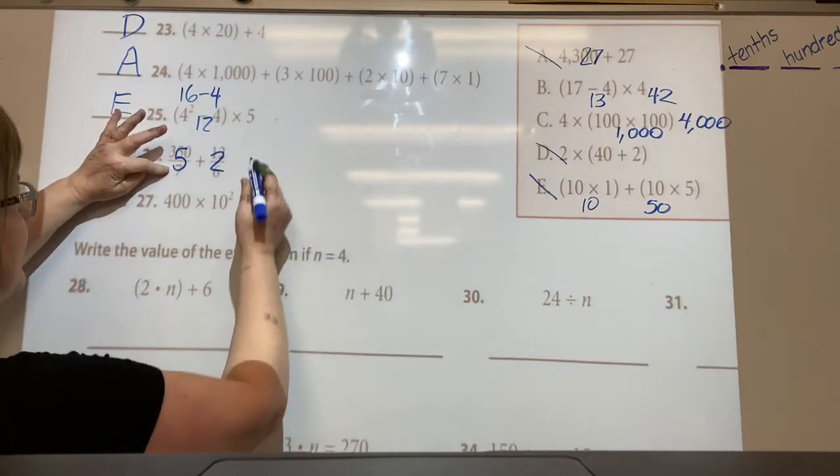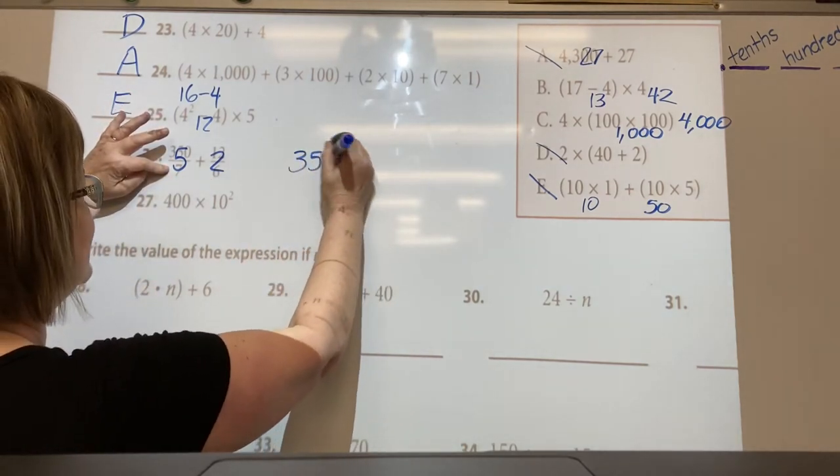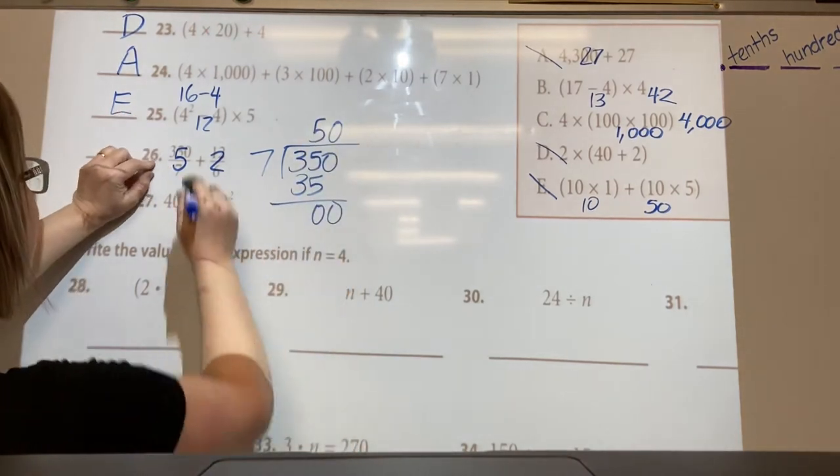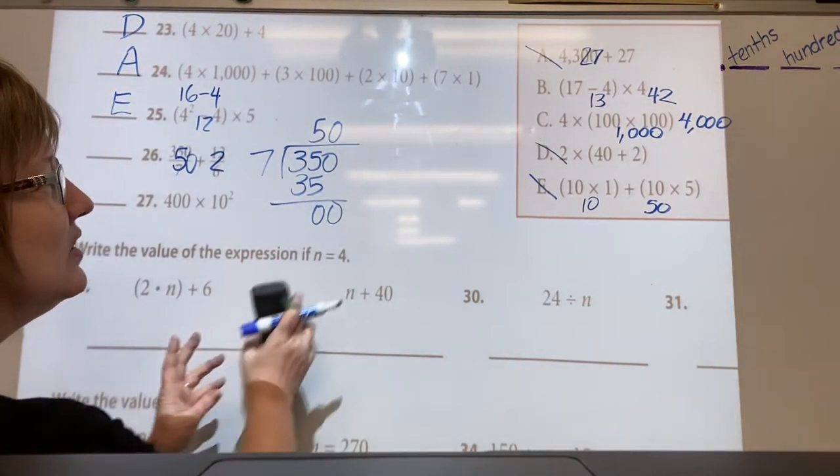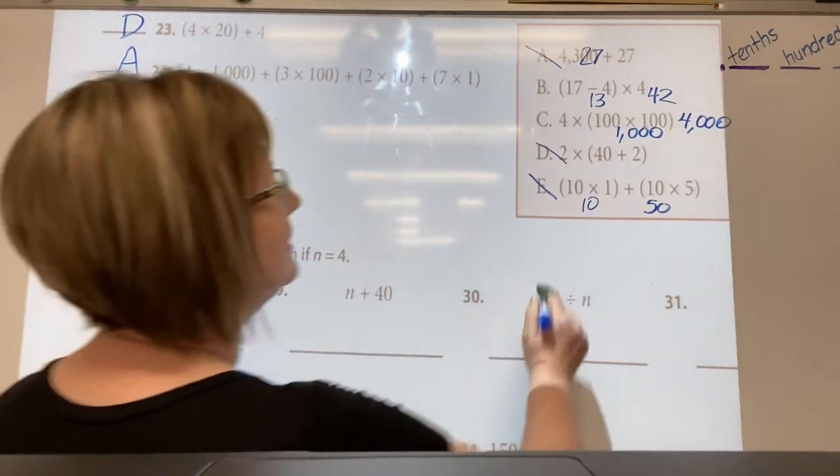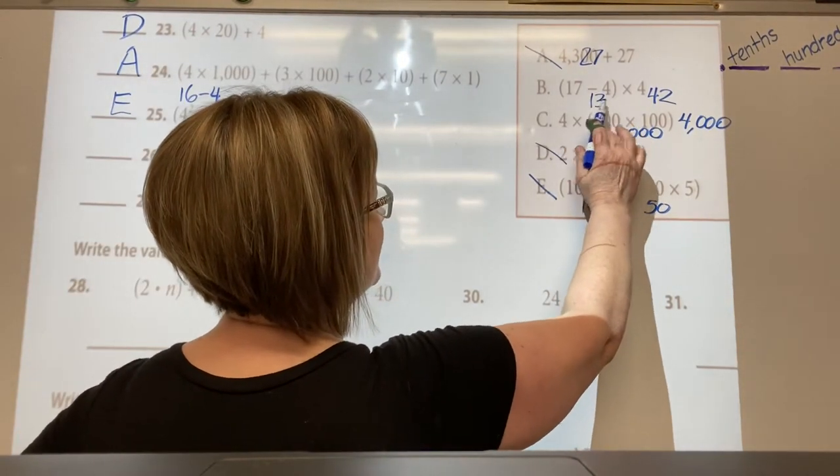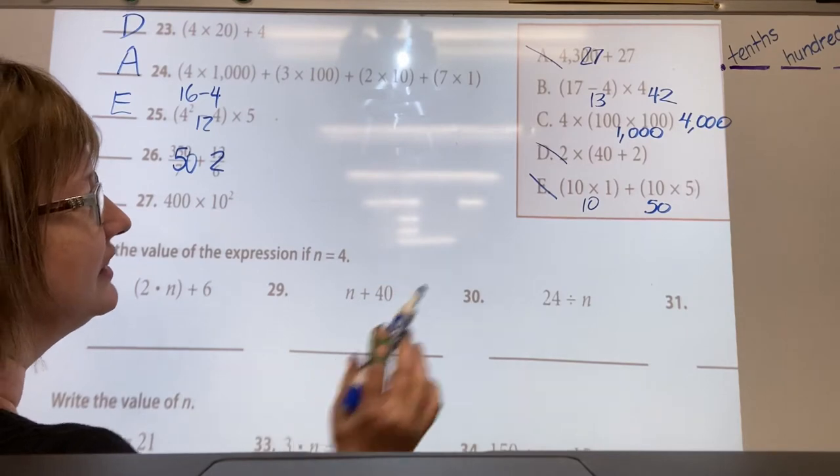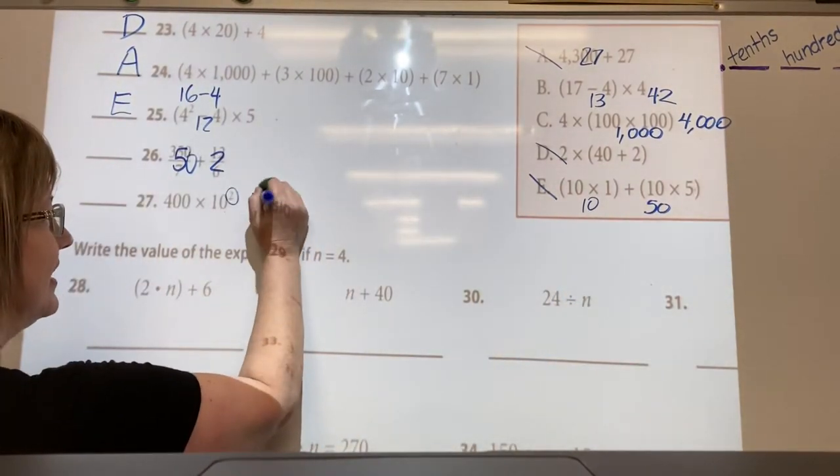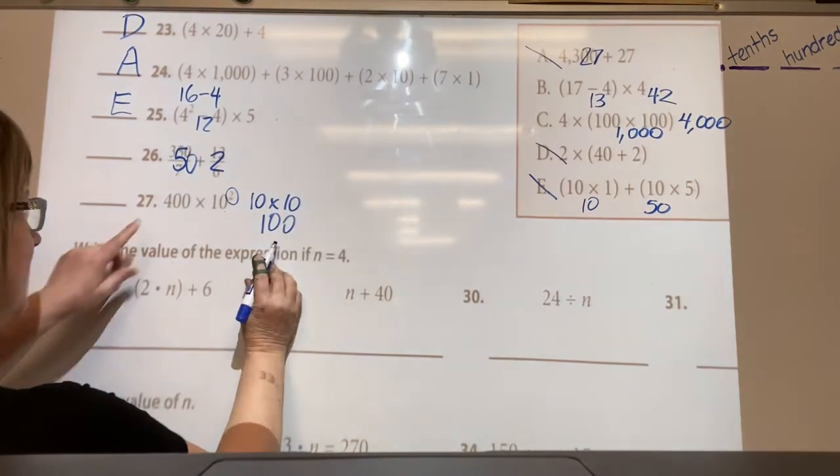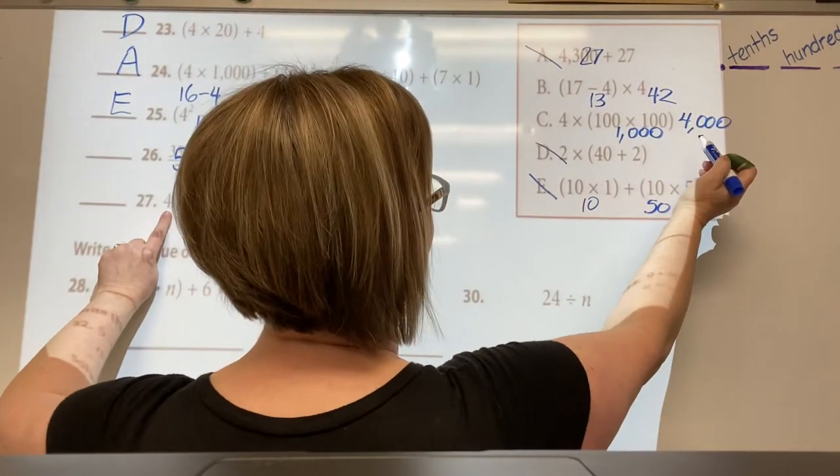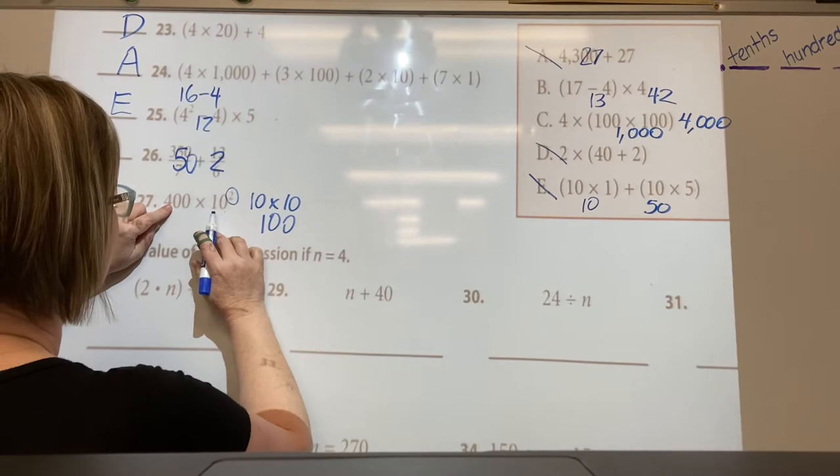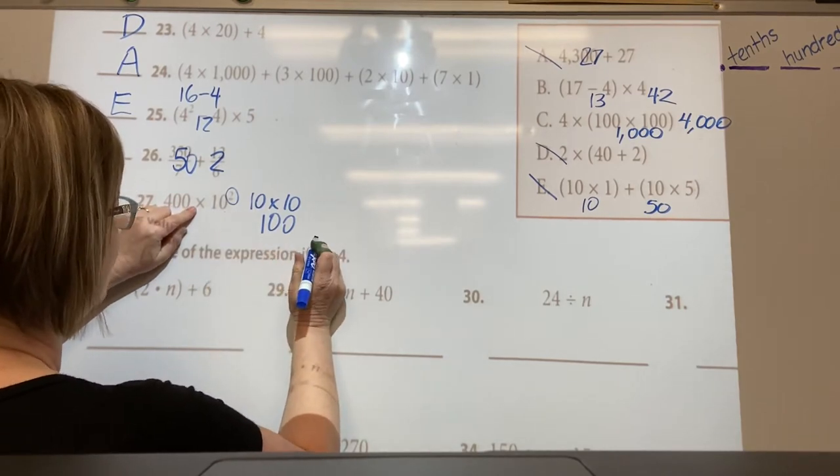Nope, 350 divided by seven is fifty, my bad. Fifty plus two. Seventeen minus four is thirteen times four is forty-two. Did I mess up there? Because this one here, ten square root is ten times ten, that's one hundred plus four hundred is five hundred.